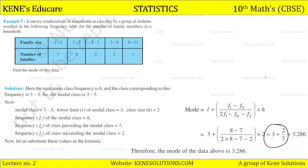Substituting: Mode = 3 + [(8 − 7) / (2×8 − 7 − 2)] × 2 = 3 + [1/7] × 2 = 3 + 2/7 ≈ 3.286. Therefore the mode of the data is 3.286.